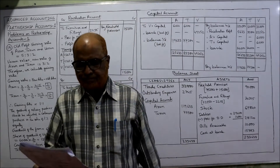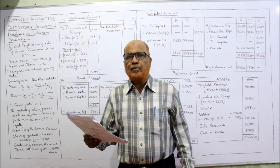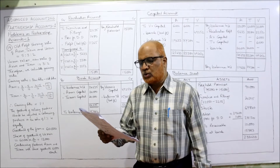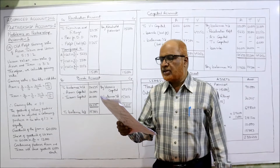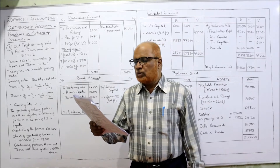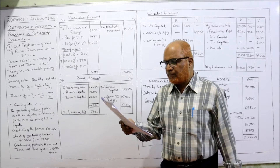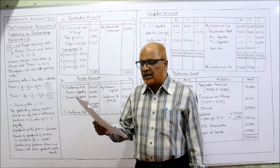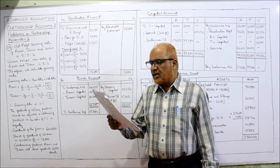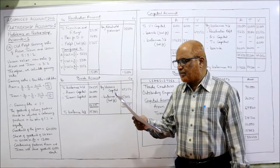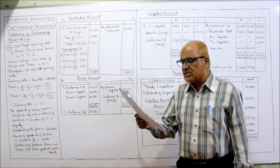Problem 19: Arun, Tarun and Varun were carrying on a business in partnership sharing profits in the ratio of 5:3:2 respectively. On 31st December 2003 their balance sheet showed liability side capital accounts of Arun, Tarun and Varun, trade creditors and outstanding expenses as outside liabilities, and on the asset side freehold premises, furniture and fittings, stock, debtors, bills receivable and cash at bank. Varun retired on 31st December 2003.